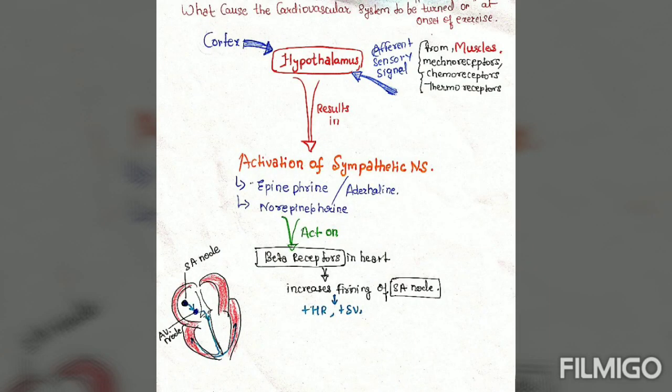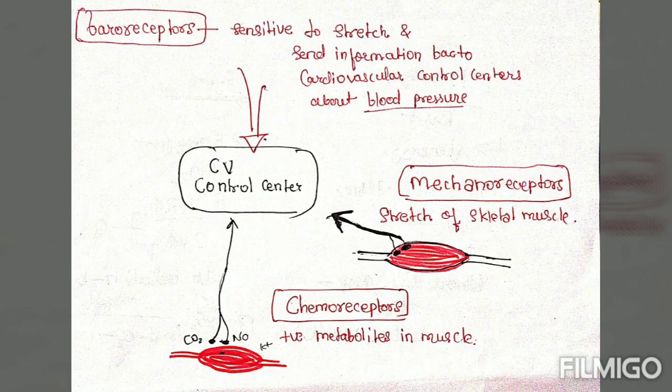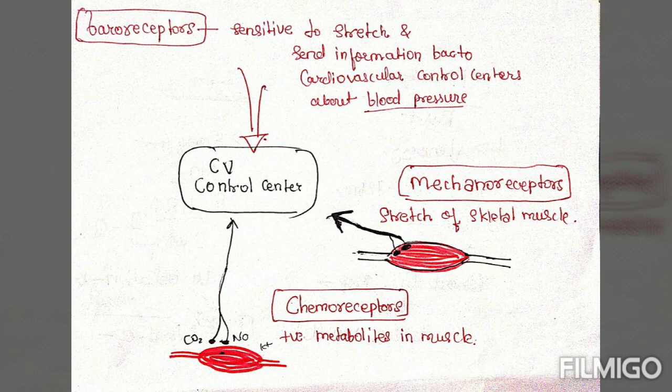The question arises: what causes the cardiovascular system to activate the sympathetic nervous system at the onset of exercise? Our brain responds to muscular contractions and physical movements. There are various kinds of receptors present in our body — chemoreceptors, thermoreceptors, baroreceptors, and mechanoreceptors.